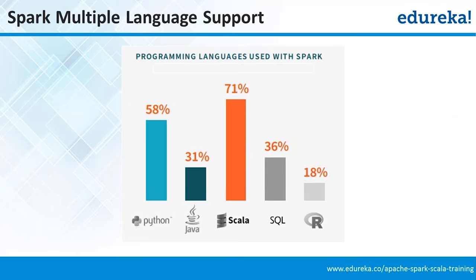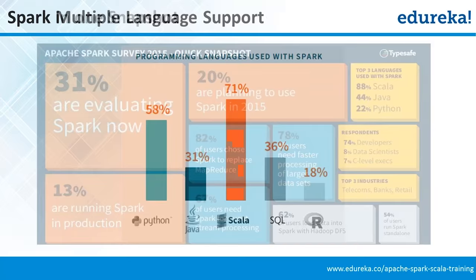Spark has multi-language support: Python, Java, Scala, SQL, and R. Looking at adoption rates, Scala has the highest adoption at 71%, Python at 58%, and Java at 31%. The adoption depends on the user base for each language.